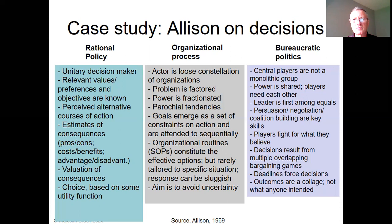He goes on to the organisational process approach, which he says recognises that there isn't really a single unitary decision-maker. There's a loose constellation of various organisations that are involved in this decision process. These organisations are separate entities, involved in the decision within one umbrella organisation — as in the Cuban Missile Crisis situation — but they're still independent. Power is fractionated, different agencies have different kinds of power, and they have parochial tendencies — they look after their own organisation's needs or interests.